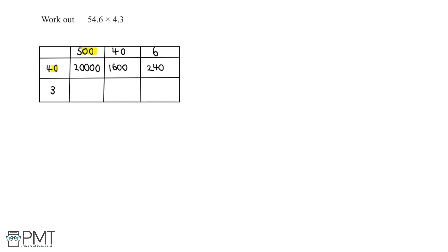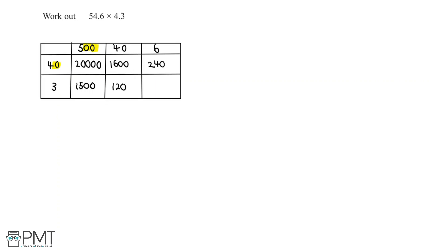Then 500 times 3, 5 times 3 is 15 plus the two zeros from the 500, and we end up with 1,500. 3 times 40, 3 times 4 is equal to 12 plus another zero, which is 120. And finally, we have 6 times 3, which is equal to 18.